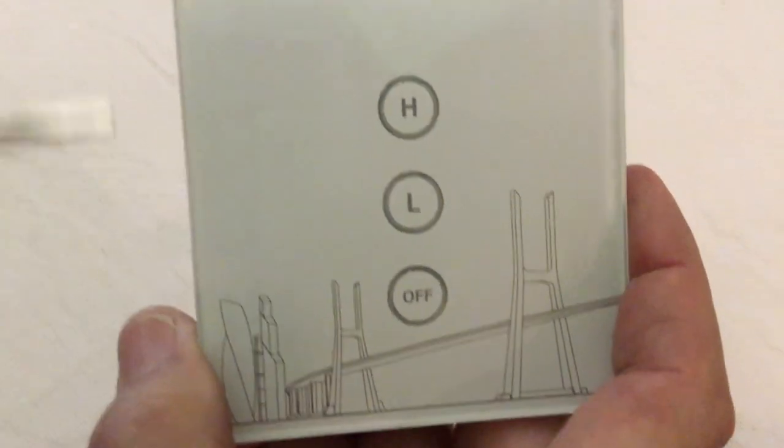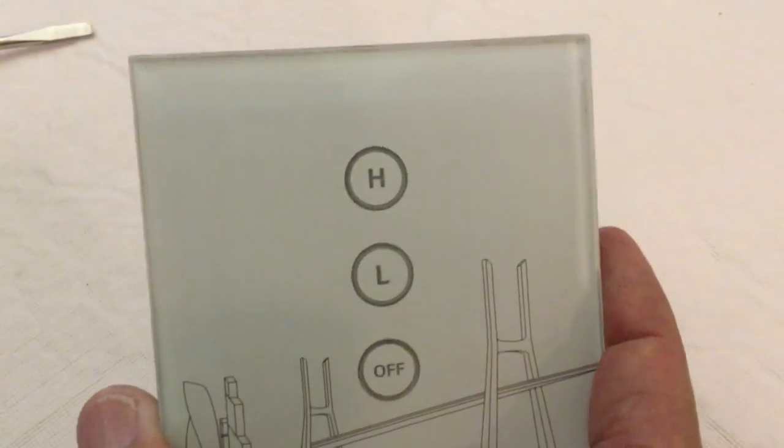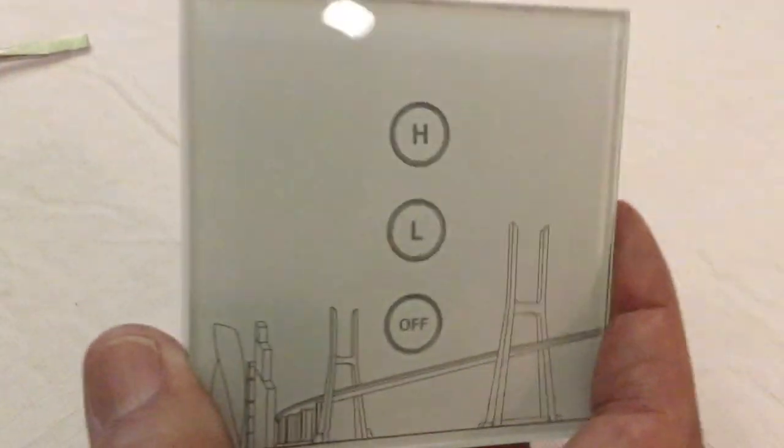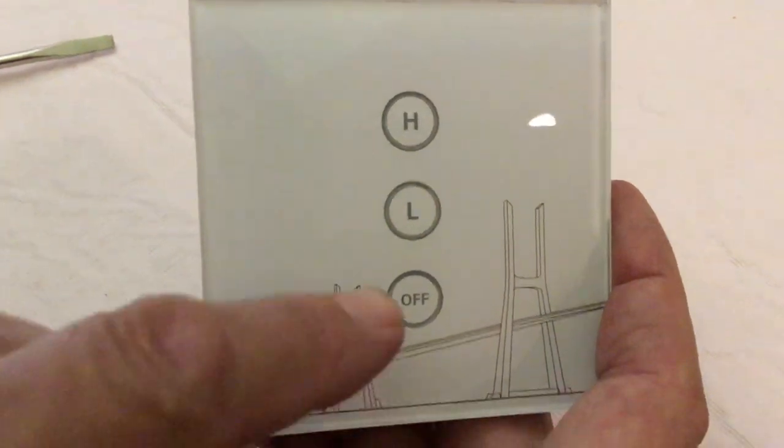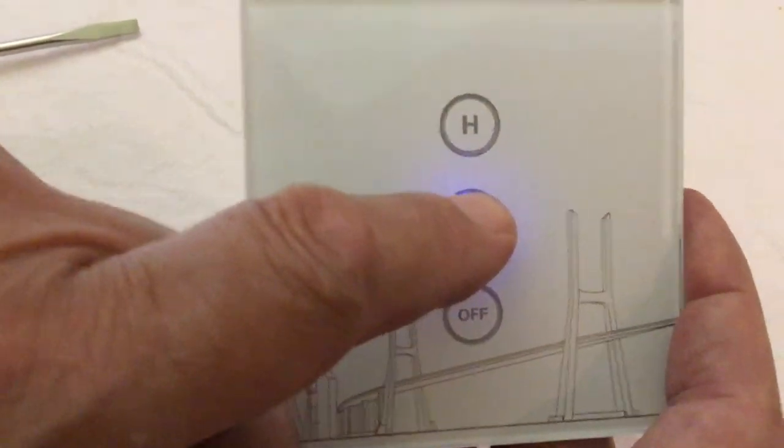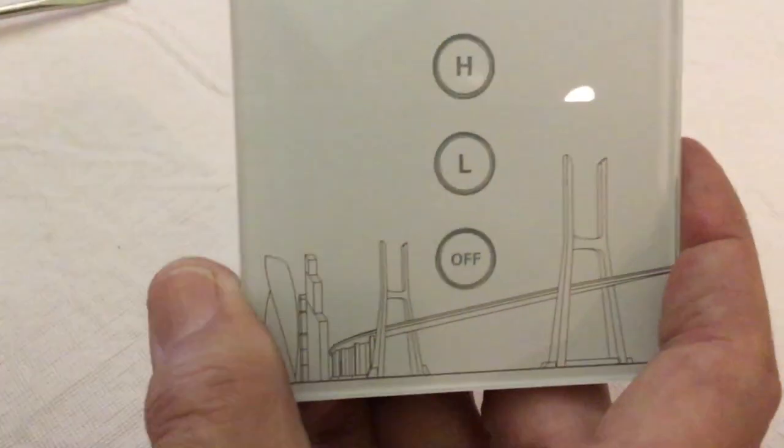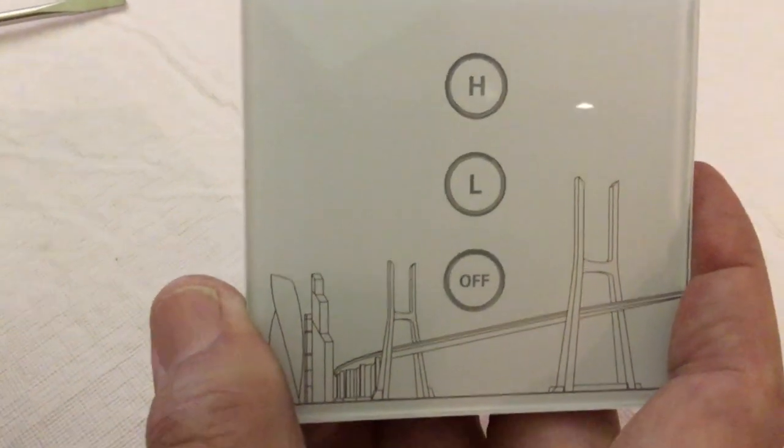To turn it on, be sure that the blower is plugged into the unit and the blower switch is turned on on the unit, and then you simply push low speed or high speed to turn the blower on.